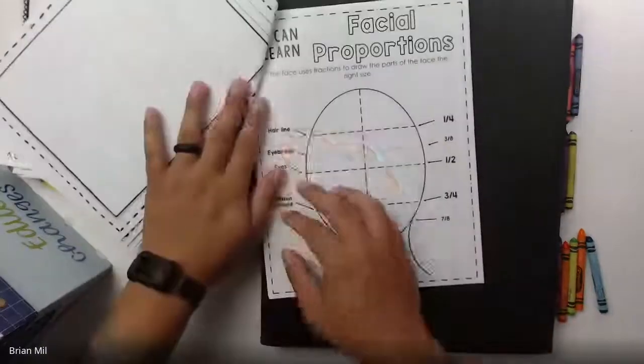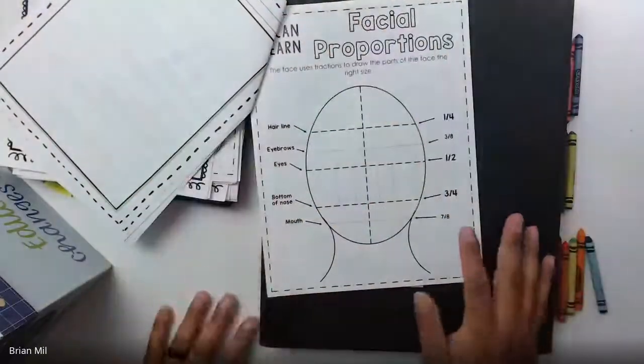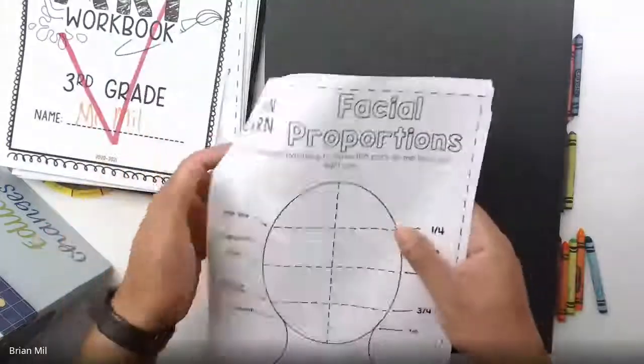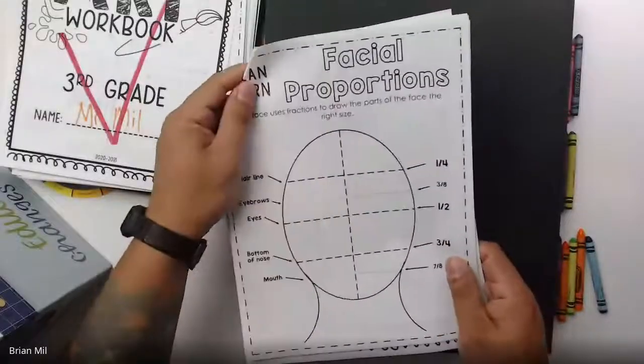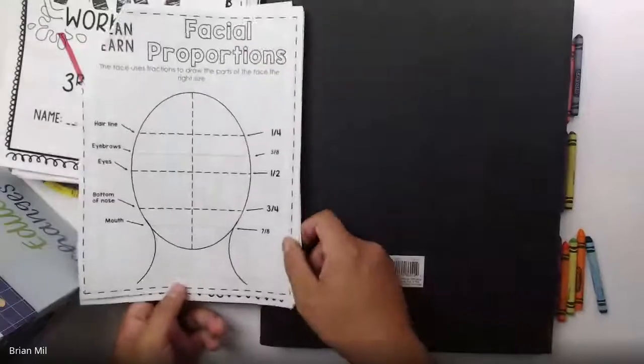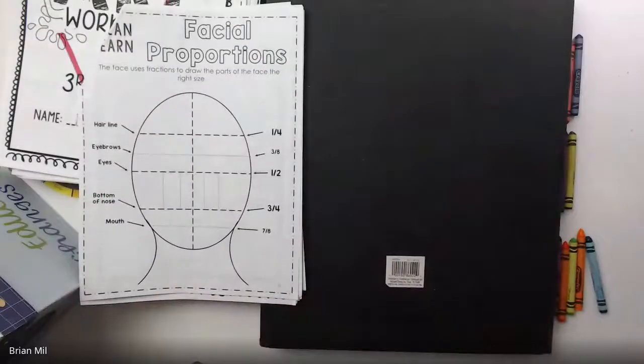Now, the next page that we're gonna be working on is facial proportions. Alright, so if you want to take a blank sheet of paper, you can. Or if you just want to follow along or just watch, you can do that too. I'm gonna put this packet right here so you can see. Now I'm gonna get a blank sheet of paper.